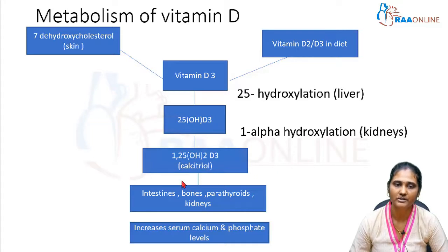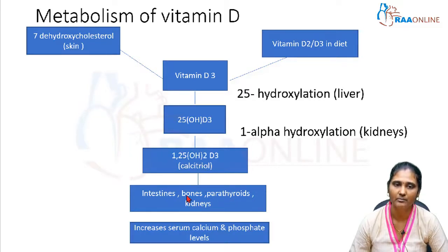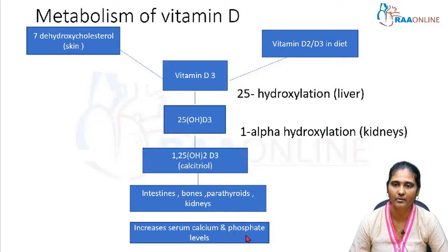The active form of vitamin D3, 1,25-dihydroxycholecalciferol, has main actions on four areas: intestines, bones, parathyroids, and kidneys. Through these actions it increases serum calcium and phosphate levels in the body. This completes the overview of vitamin D metabolism.